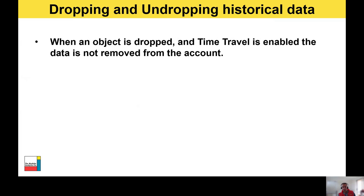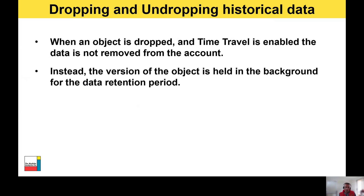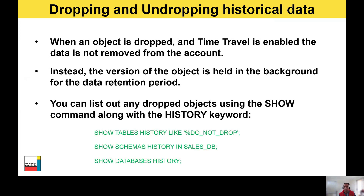Dropping and undropping historical data: when an object is dropped and Time Travel is enabled on that object, the data is not removed from the account. Instead, the version of the object is held in the background for the data retention period. You can list out any dropped objects using the SHOW command along with the HISTORY keyword, as shown in these examples.